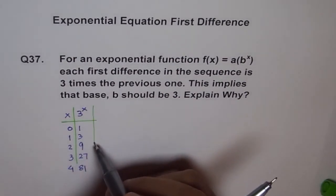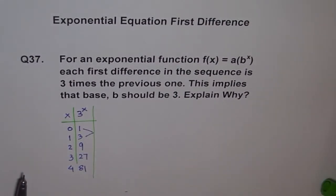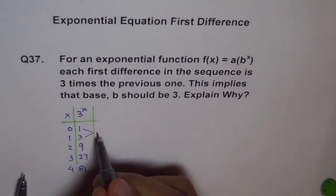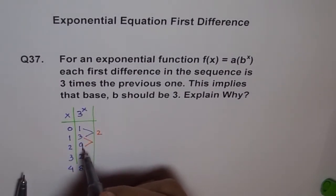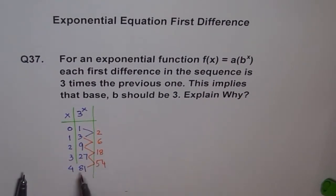Now let's do first difference. So if I do first difference, that means this minus this. Then we get 3 minus 1 is 2, and 9 minus 3 is 6, and 27 minus 9 is 18. And 81 minus 27, so 11 take away 7 is 4 and we have 7 here and 7 take away 2 is 5, so 54.